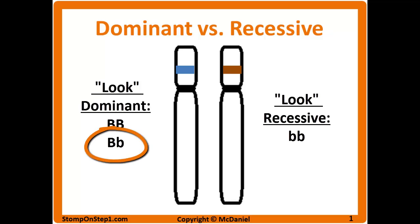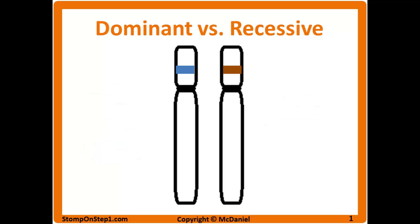Heterozygous individuals would have one dominant and one recessive allele, and they would show the phenotype of the dominant gene. However, these heterozygous individuals are considered carriers for that recessive gene — they themselves won't show the phenotype of the recessive gene but they can pass it on to their offspring. An exception to this system would be codominance, most often seen in blood type inheritance, where two different genes can both be dominant at the same time — that is why you can have type A and type B blood together.